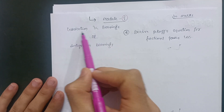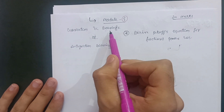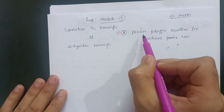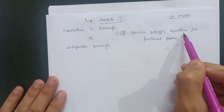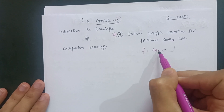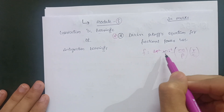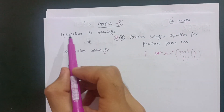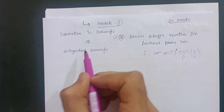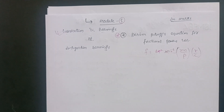Module 5 has two parts: lubrication and bearings, and anti-friction bearings. Go for the first part — lubrication and bearings. There are some theory concepts to cover, and one important definite derivation: derive the Petroff equation for frictional power loss. The equation is f = 2π² × 10⁻⁶ × (ZN/P) × (r/c). Memorize and derive this equation. The lubrication and bearings part is much easier compared to anti-friction bearings, so you can make 20 marks possible here.